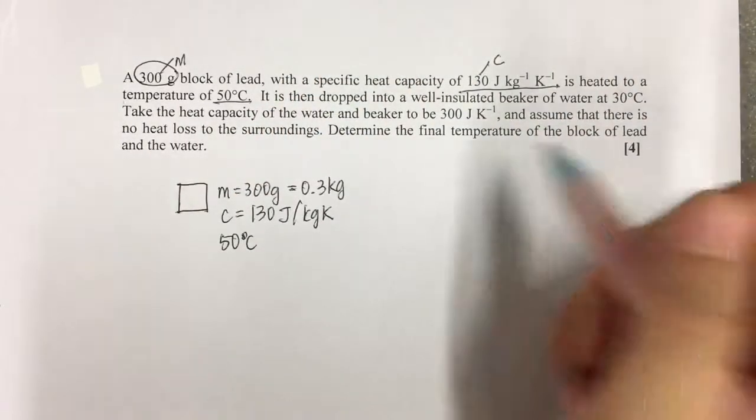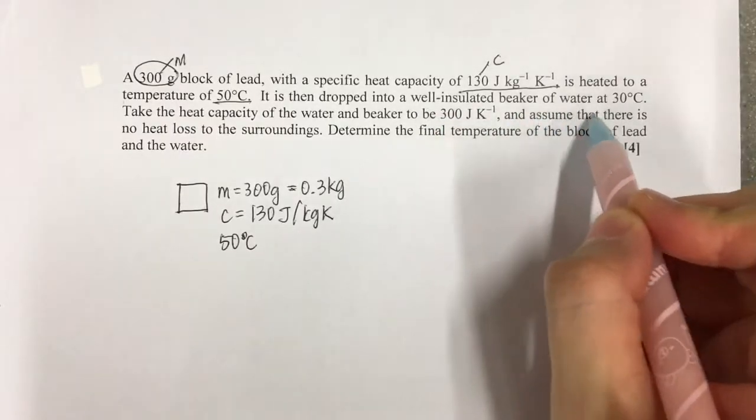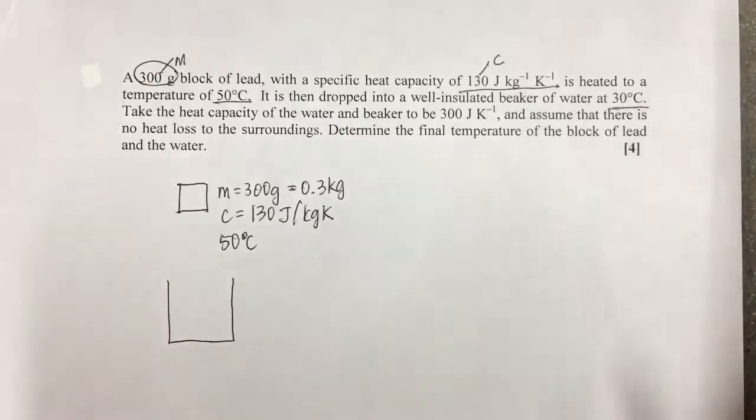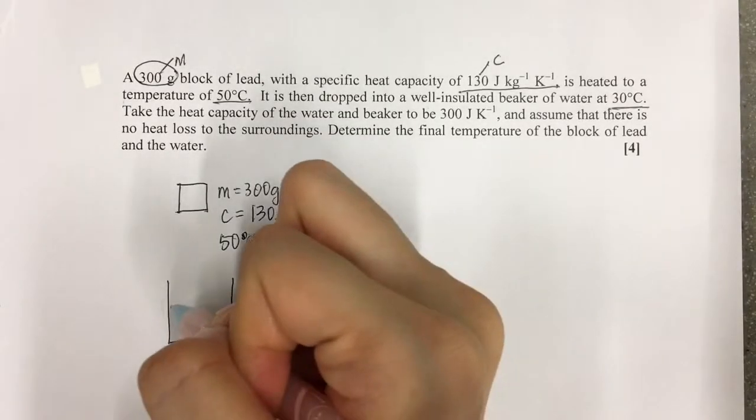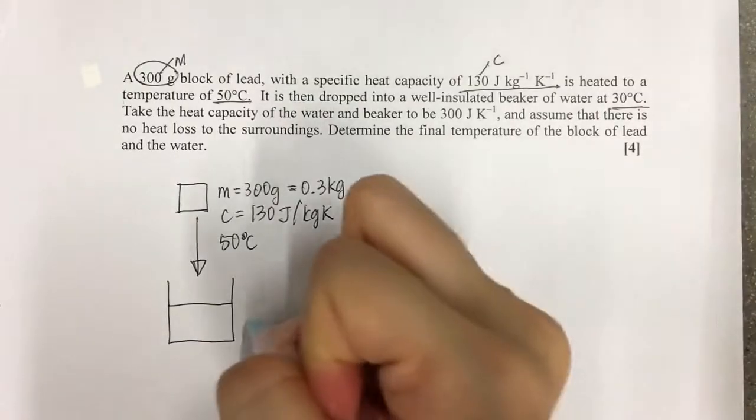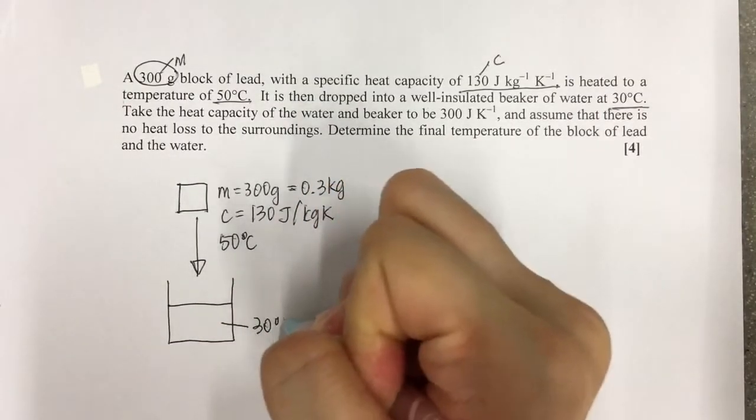It is then dropped into a well-insulated beaker of water at 30 degrees Celsius. So we have a beaker of water, the lead is going into the beaker of water. This water is at 30 degrees Celsius.